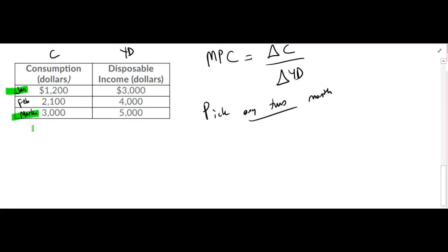From January to March, as you can see, our consumption is going up by $1,800. So change in consumption is going to be equal to $3,000 minus $1,200, which is going to be equal to $1,800.